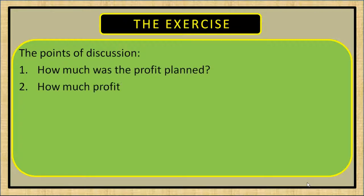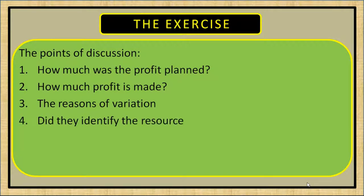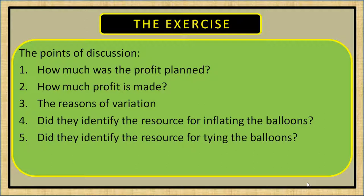How much was the profit planned? How much profit is made? The variation and reasons of variation. Did the team identify the resource for inflating the balloons? Remember the teams had been given two balloons. Naturally they should have found out during discussion period who has expertise for inflating the balloons. Did they identify the resource for tying the balloons?